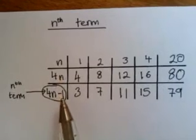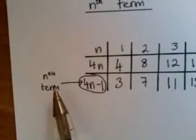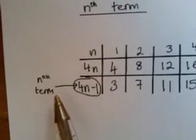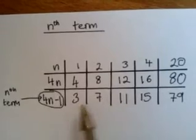This n, 4n, 4n minus 1, these are basically the nth terms. That's what we're talking about, really. They are the rules to work out how you get from anywhere in this row to your pattern.